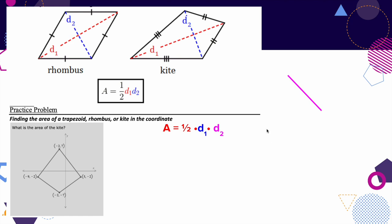Now we're going to calculate the area using a coordinate grid. Here's a rhombus and here's a kite. They look very similar, but a rhombus has four congruent sides while a kite has two consecutive congruent sides. On this one it's the two right sides, and on this one it's the two left sides.